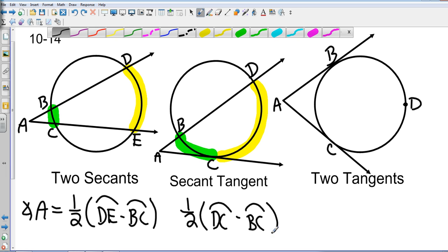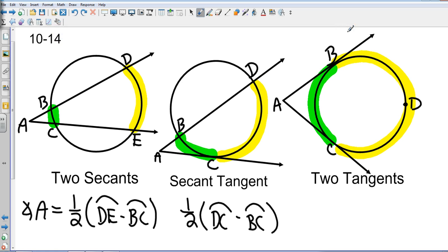And then with the two tangents, we are also going to have the difference of the larger one minus the smaller one. So it's going to be the larger arc minus the smaller arc. So that is one-half of major arc BDC minus minor arc BC.